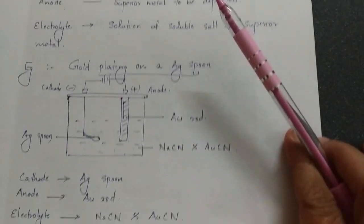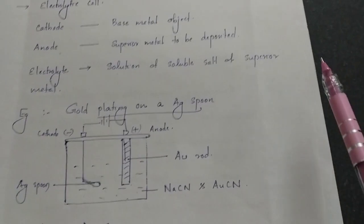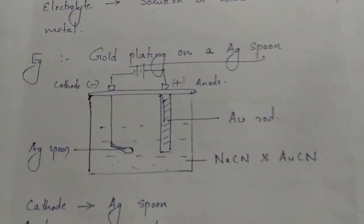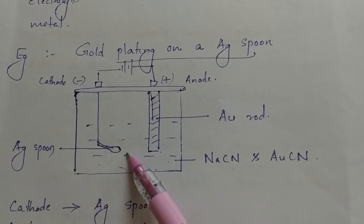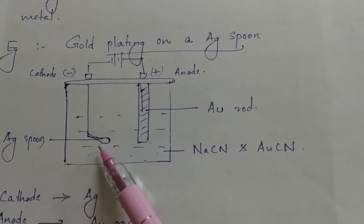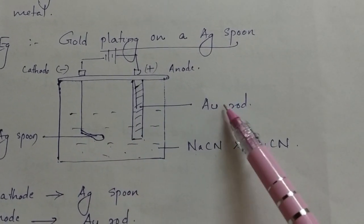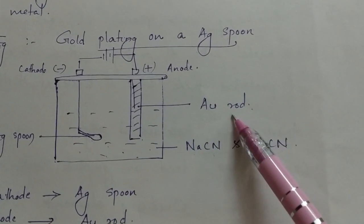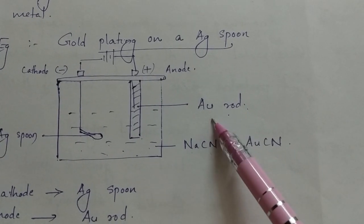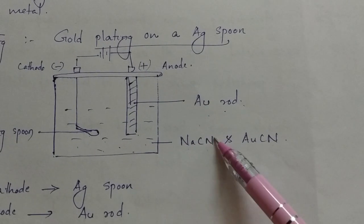In our syllabus we have two examples. The first is gold plating on a silver spoon. In the diagram, we have a silver spoon at the cathode and a gold coating. We have a cathode and an anode.